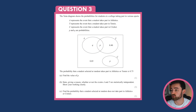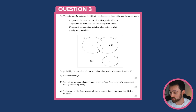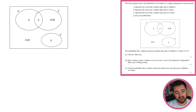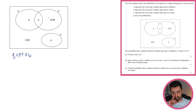Question 3. The Venn diagram shows the probabilities for students at a college taking part in various sports. A is athletics, T is tennis, C is cricket. P and Q are probabilities. The probability that a student selected at random takes part in athletics or tennis is 0.75. We need to find the value of P. Athletics or tennis is represented by this whole region, which is Q + P + 0.4 = 0.75.